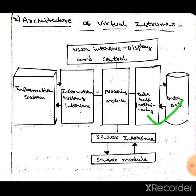The next one is database interfacing, which allows measured data to be stored for offline processing. The next one is user interface display and control, which is used for the presentation and control of a virtual instrument.